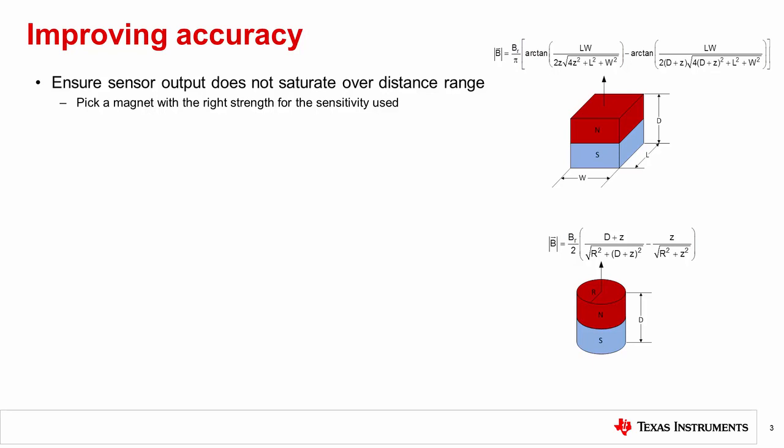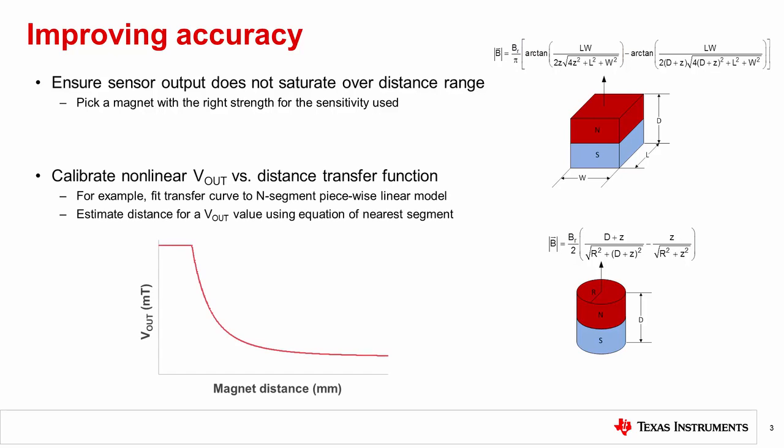Another important consideration for measurement accuracy is the inherent non-linearity of the magnet distance-to-sensor output transfer function. While it is easy to solve for flux density B if the sensor output voltage is known, it is quite difficult to solve the magnet equations for distance Z for a given value of B, assuming magnet properties are known. For this reason, the transfer function must be calibrated to a simpler model, preferably a linear model, that can be solved more easily for the magnet distance.